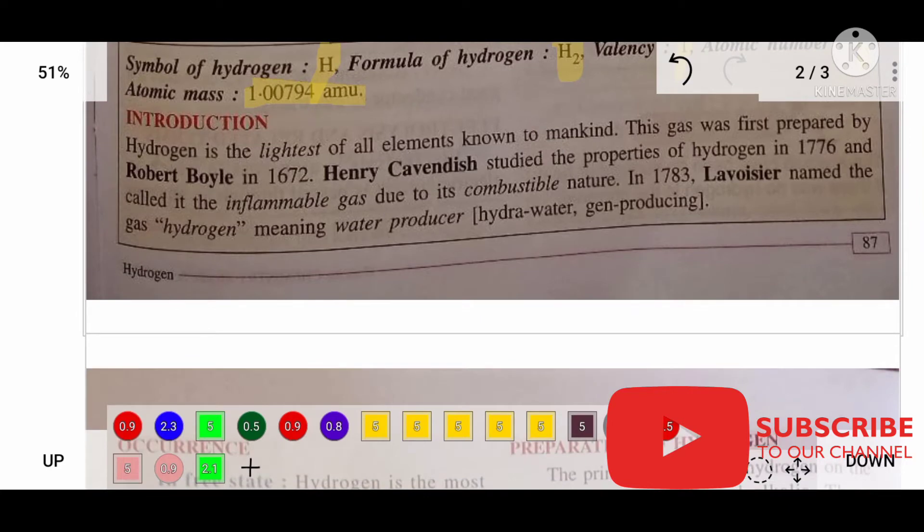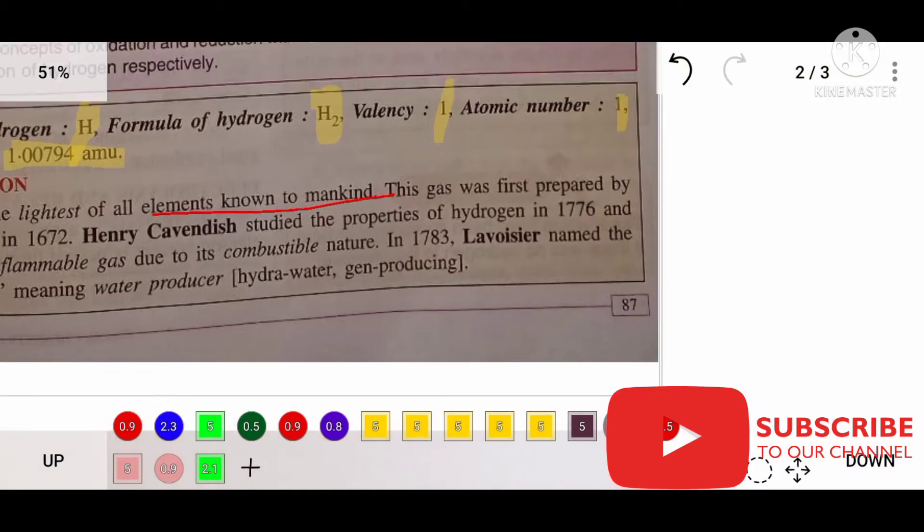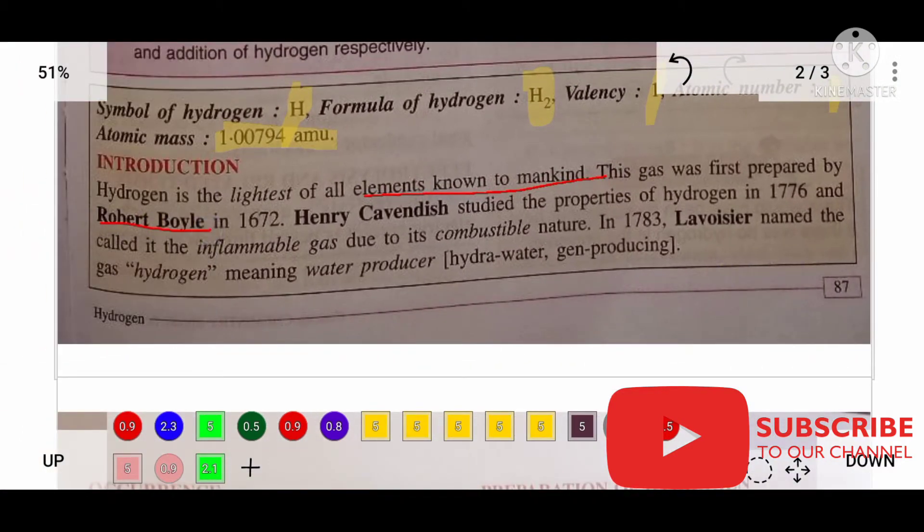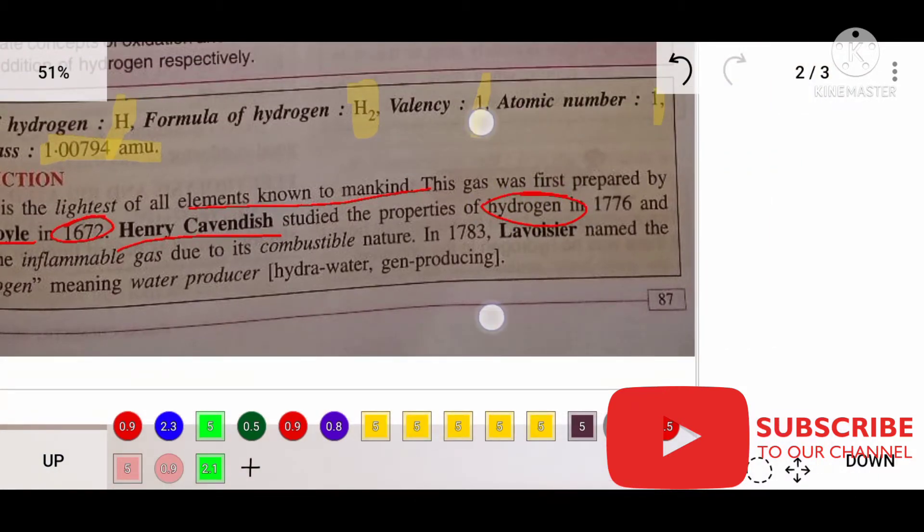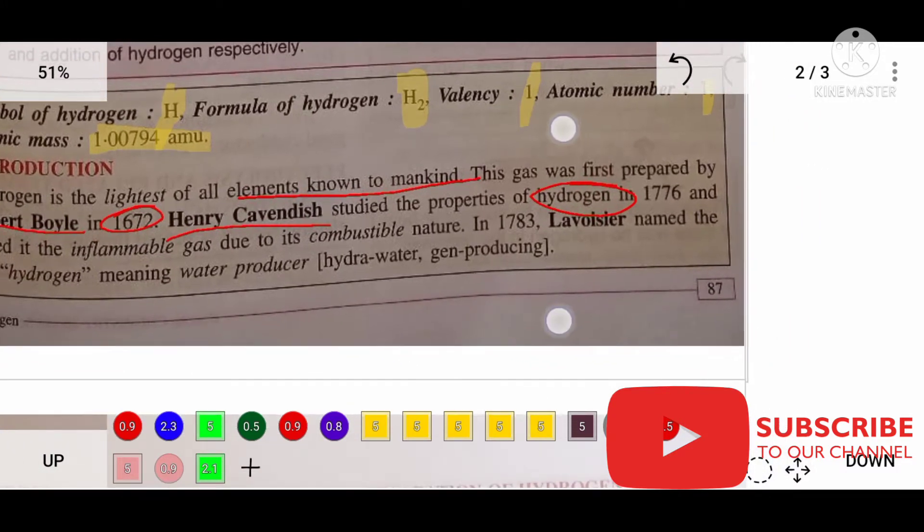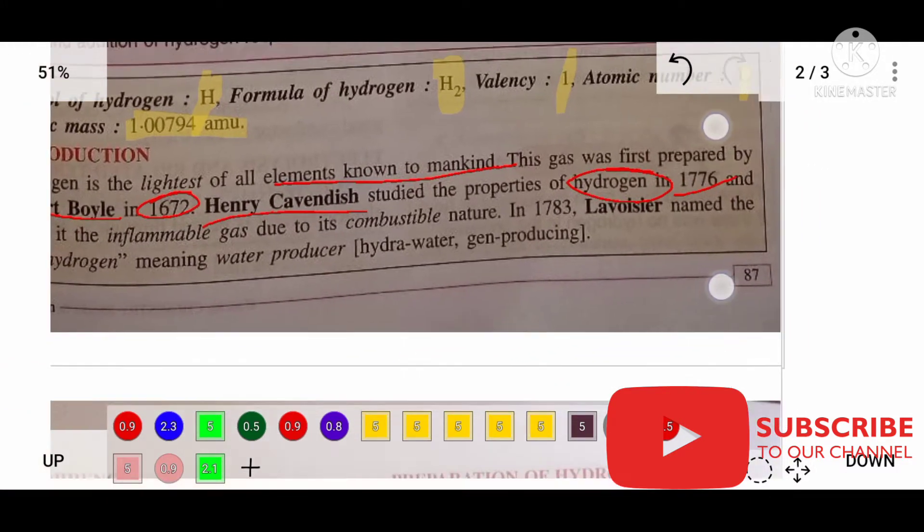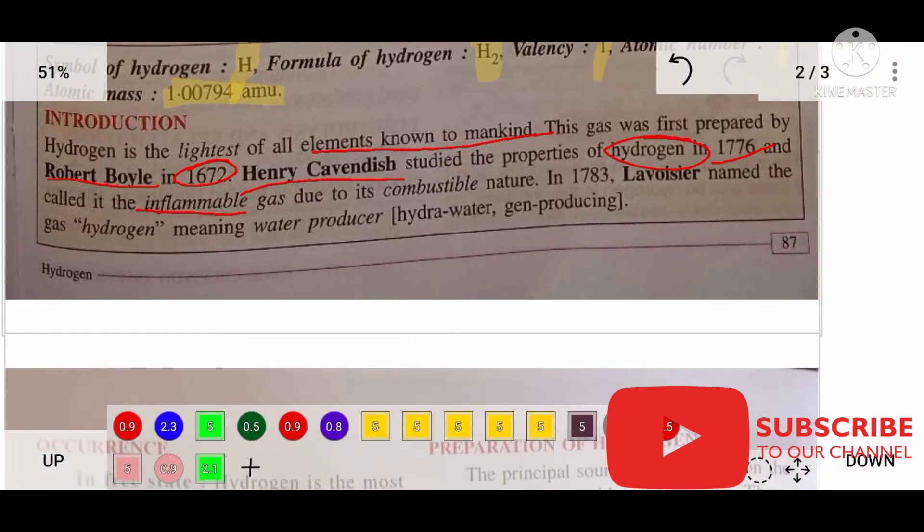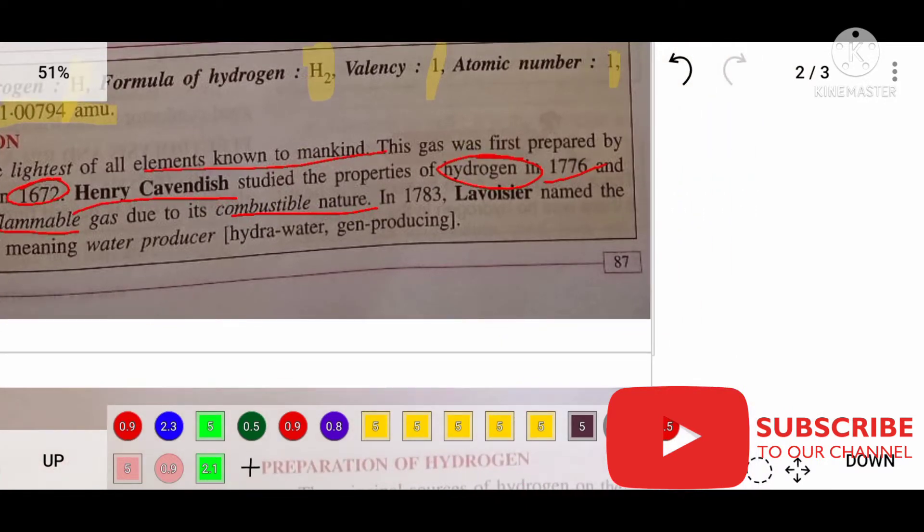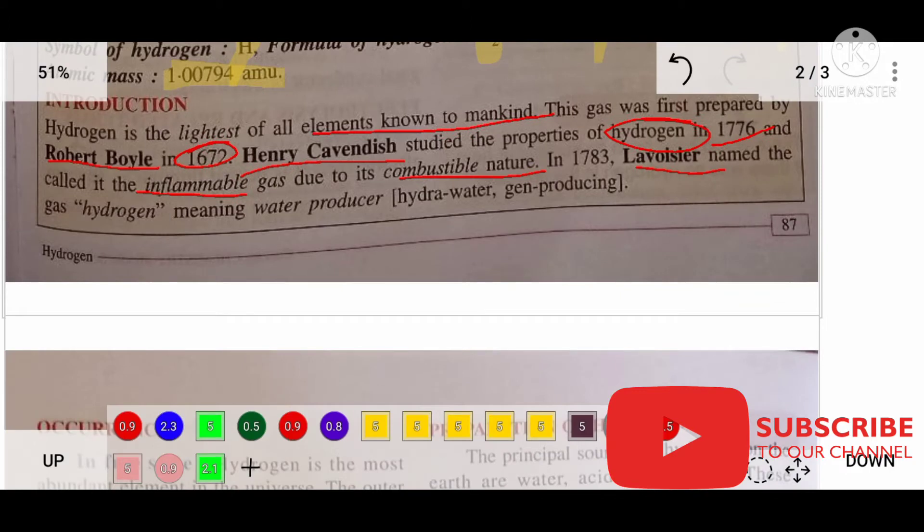Let me read the introduction. Hydrogen is the lightest of all elements known to mankind. The gas was first prepared by Robert Boyle in 1672. Henry Cavendish studied the properties of hydrogen in 1776 and called it 'inflammable gas' due to its combustible nature. In 1783, Lavoisier named the gas hydrogen, meaning water-producing (hydro means water, generation means producing).